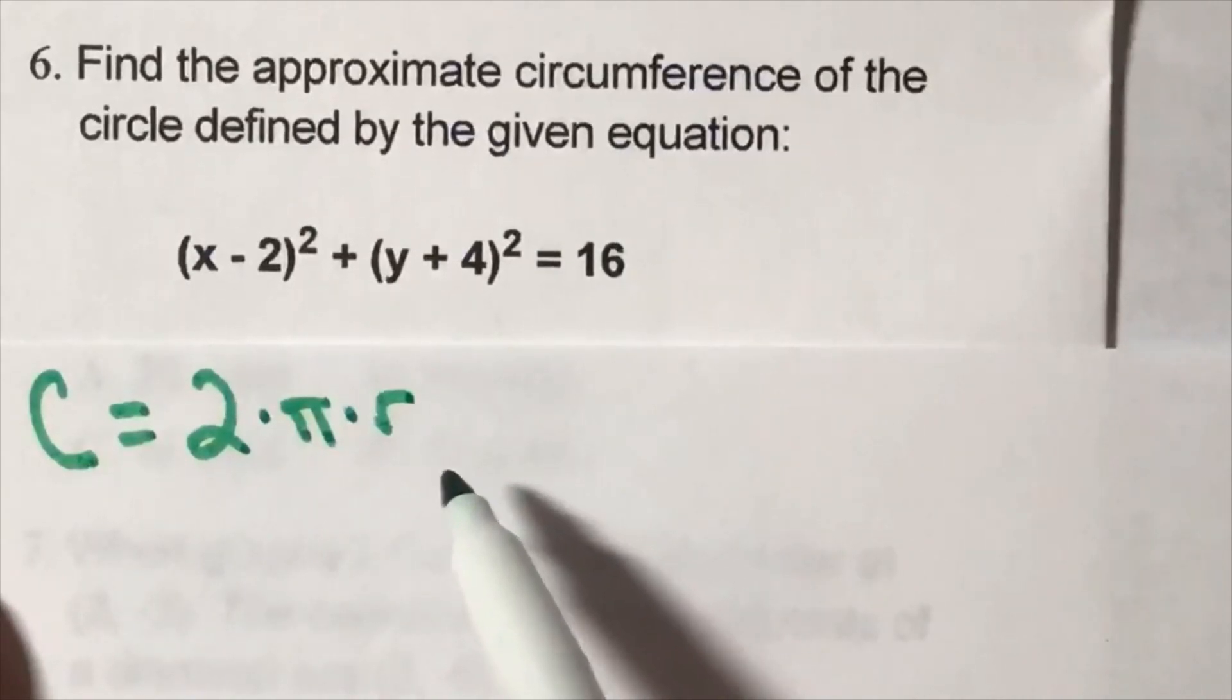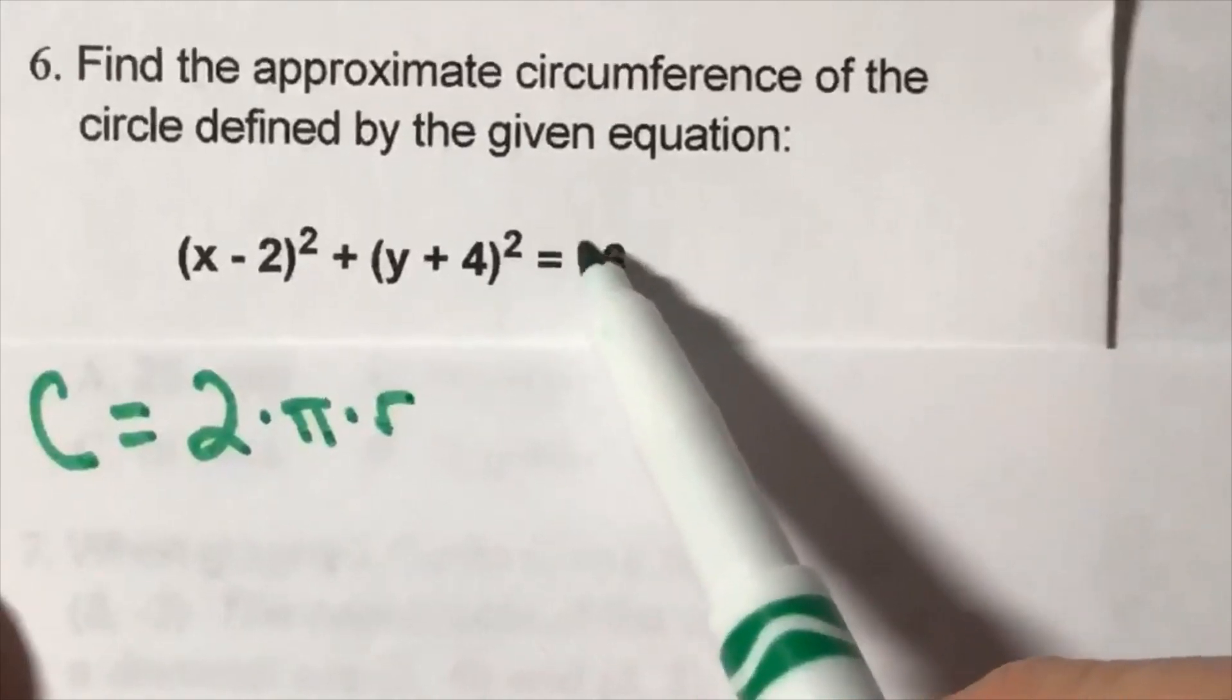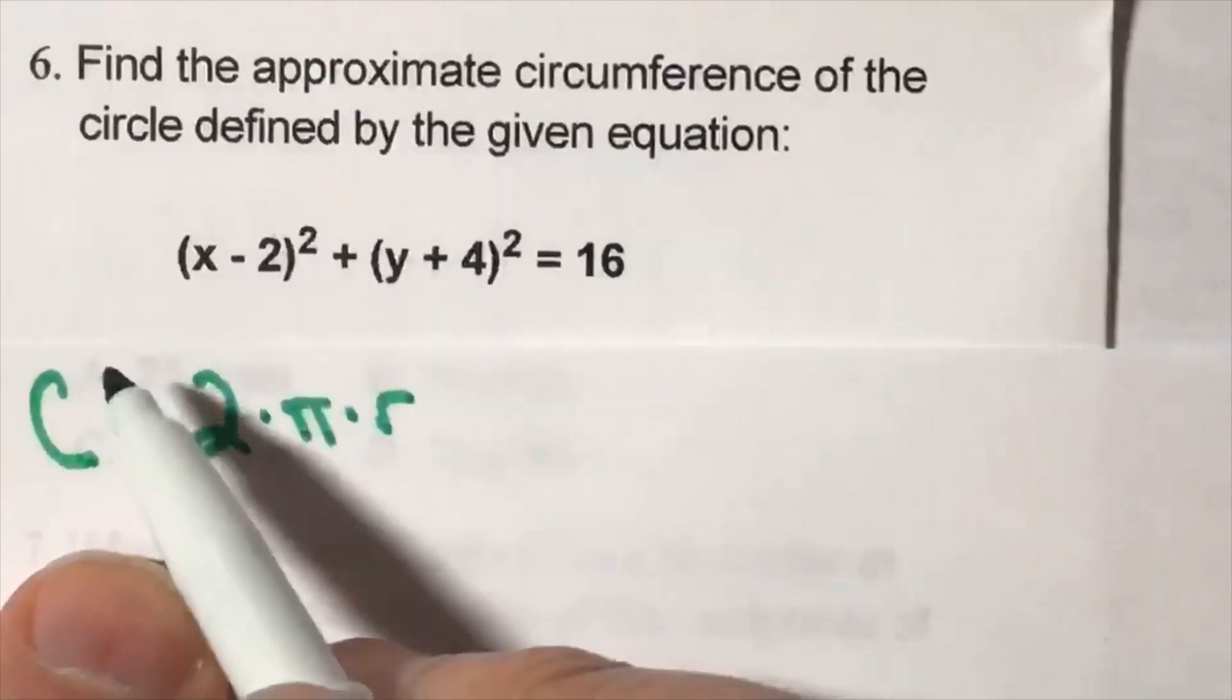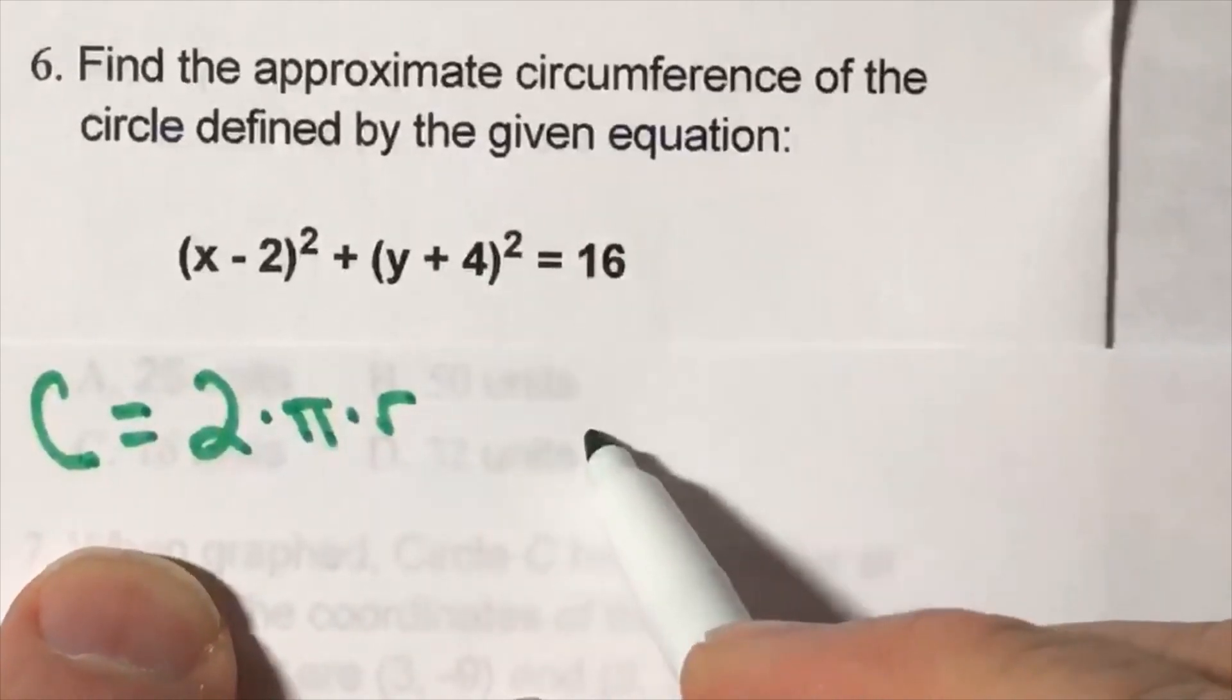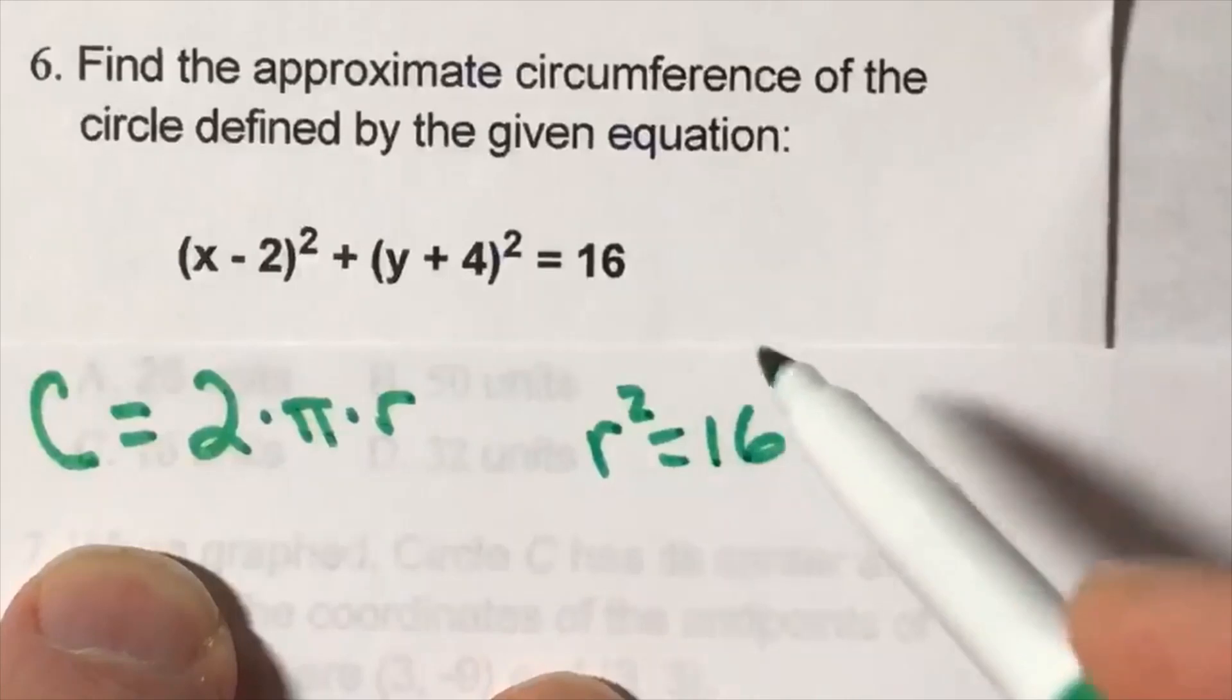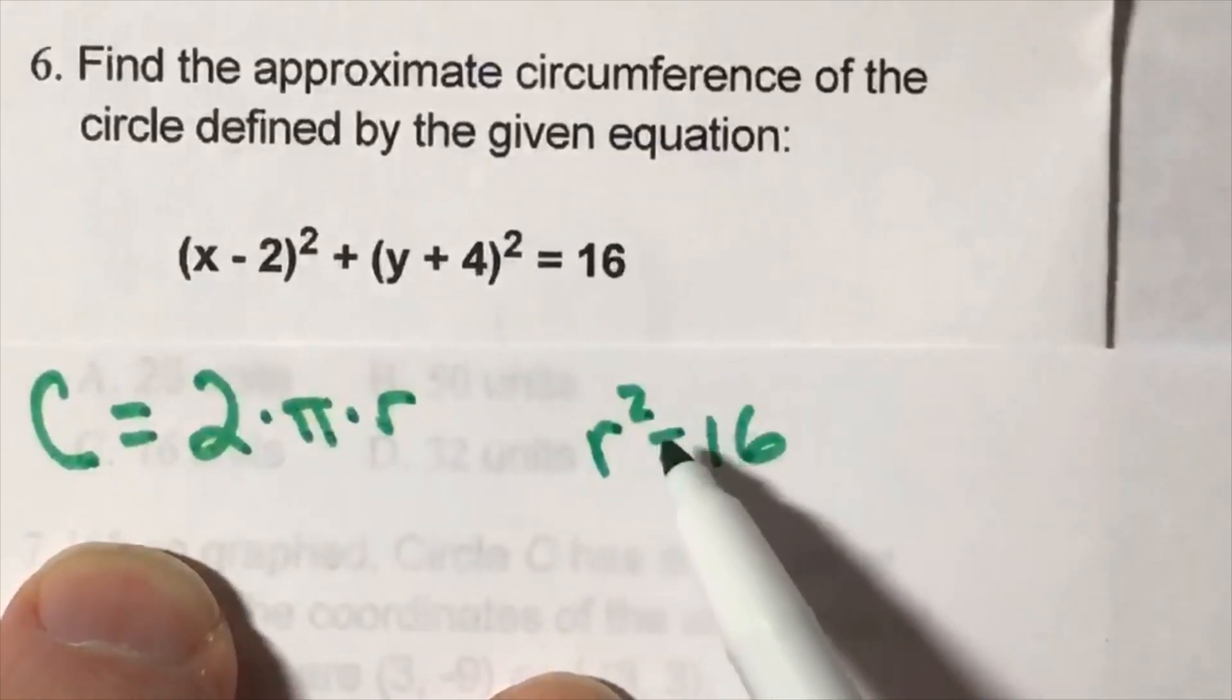So we need to find the radius. This number here to the right of the equal sign can find the radius from that. The circle equation has to be radius squared, right? So the radius gets squared.